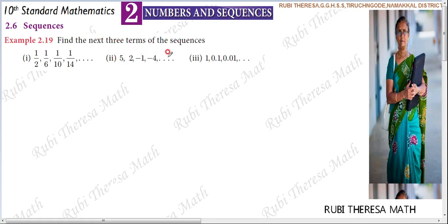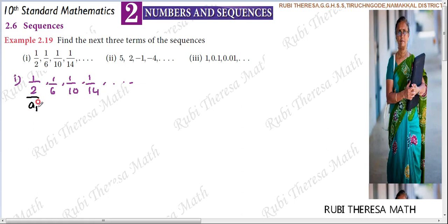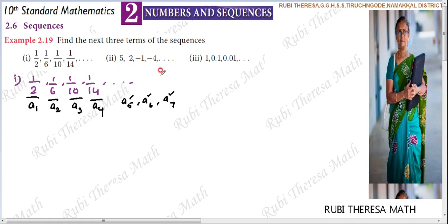In the sequence, one more sequence is given. What we have to find is the next 3 terms. First subdivision: 1/2, 1/6, 1/10, and 1/14, comma dot dot dot. In the sequence, the terms are given. The first term is denoted as A1, second term A2, third term A3, fourth term A4. So the next 3 terms we have to find are A5, A6, A7 — the fifth term, sixth term, and seventh term.